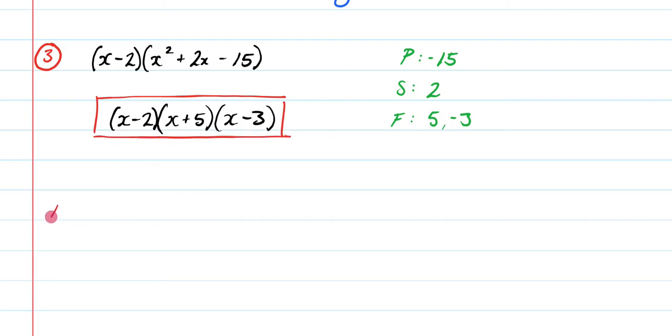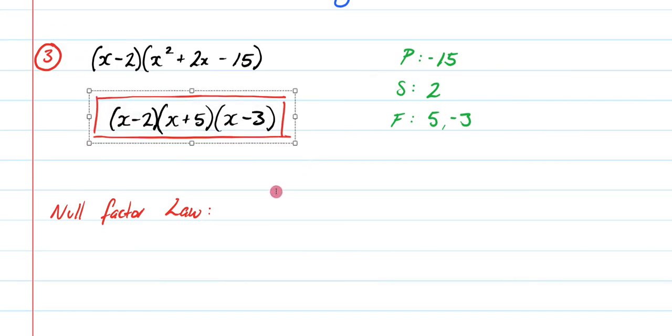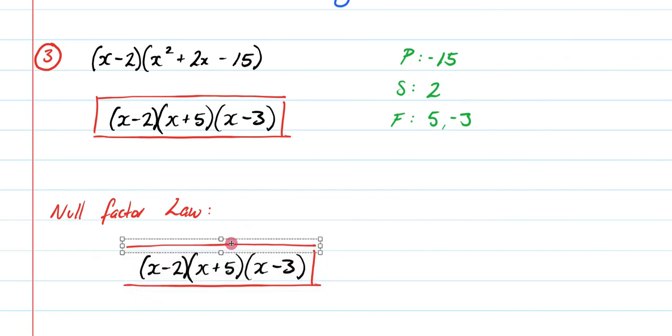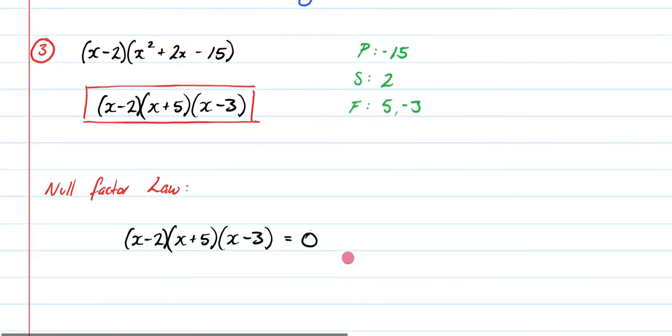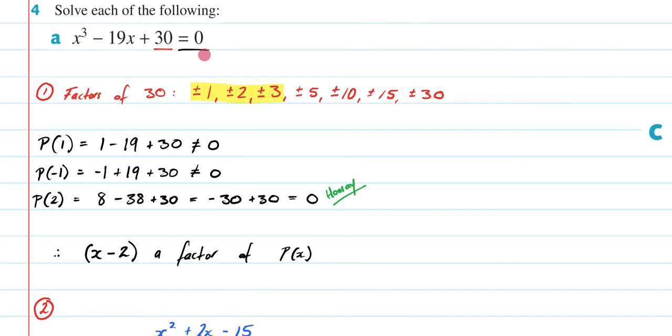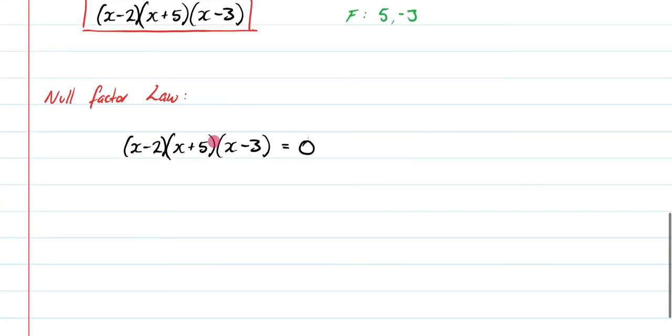Now that we have it in our factorized form. So that is right here. This is what we were after. We can now use our null factor law, which tells us that this right here. So let me bring this down. Let me get rid of these. This right here, if you remember at the very beginning of the question, it was set equal to zero. Let's just zoom out to prove that to you. If we go right to the top of our working here, you can see that it was set equal to zero. So that means we can't change it. It still has to be set equal to zero. We've just factorized it now.